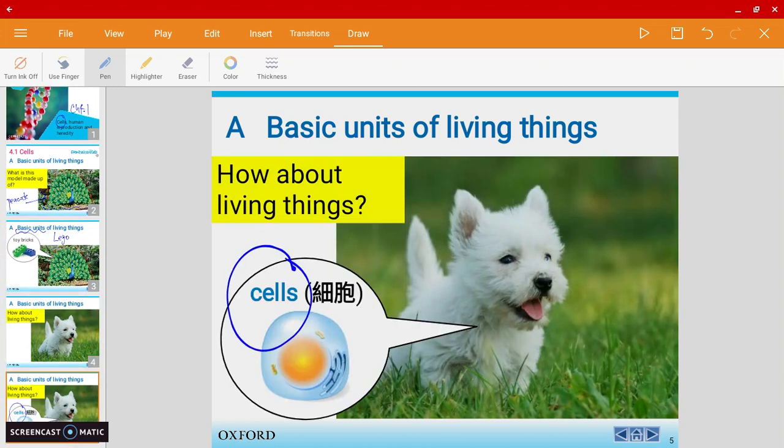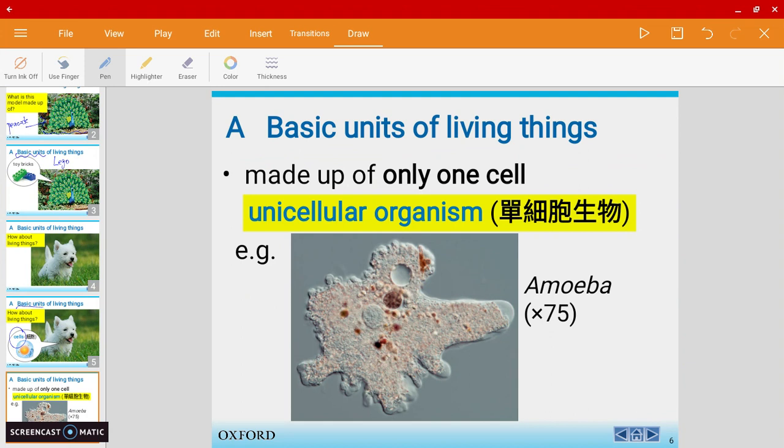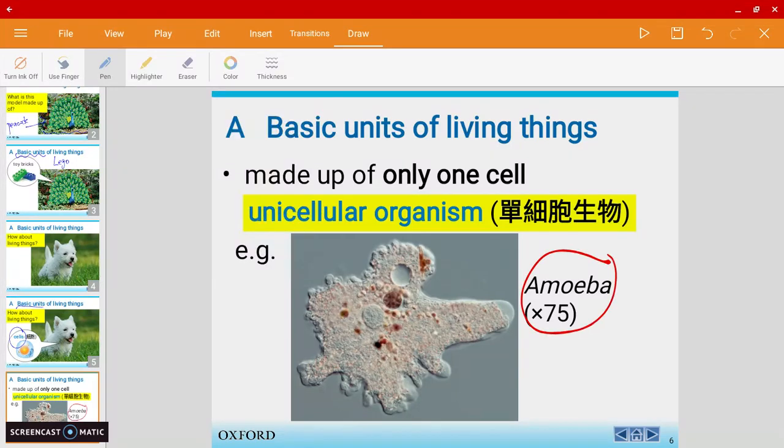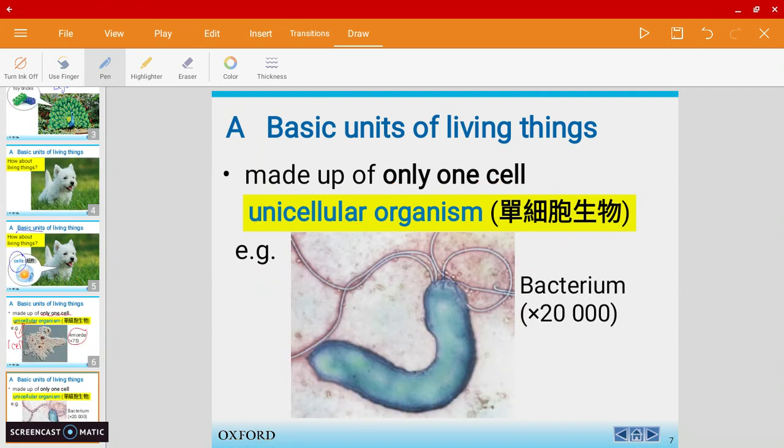Living things comprise of cells as a basic unit. Let's look at some examples. In chapter 3, you learned about amoeba. Amoeba is only made of one single cell. We call it a unicellular organism, meaning only one cell. Another example of a unicellular organism is bacterium, which we also learned in chapter 3.